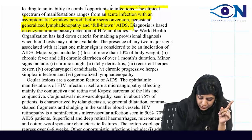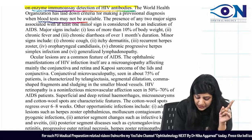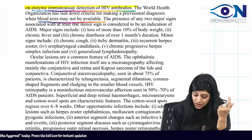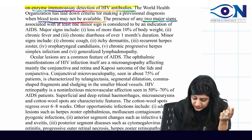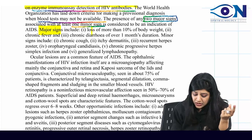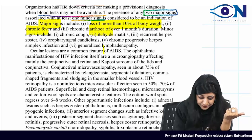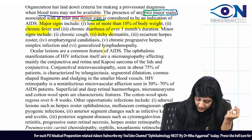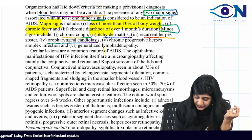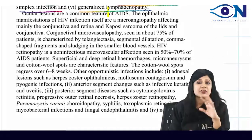Diagnosis is based on enzyme immunoassay (ELISA). The WHO has laid criteria for a provisional diagnosis when blood tests are unavailable. Any two major signs plus one minor sign is an indication. Major signs: more than 10% loss of body weight, fever, and diarrhea. Minor signs: chronic cough, itchy dermatitis, recurrent herpes, oropharyngeal candidiasis, chronic progressive herpes infection, and generalized lymphadenopathy.